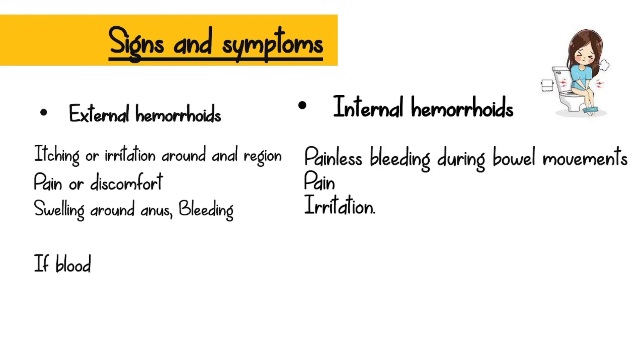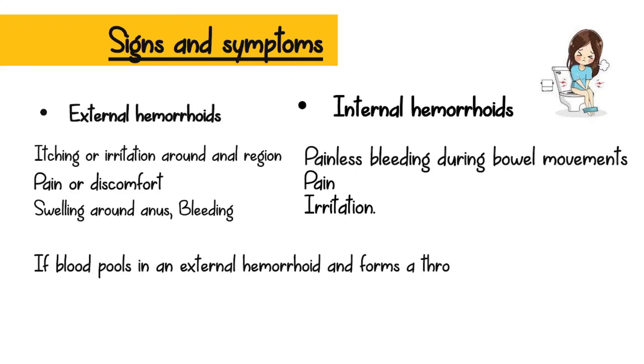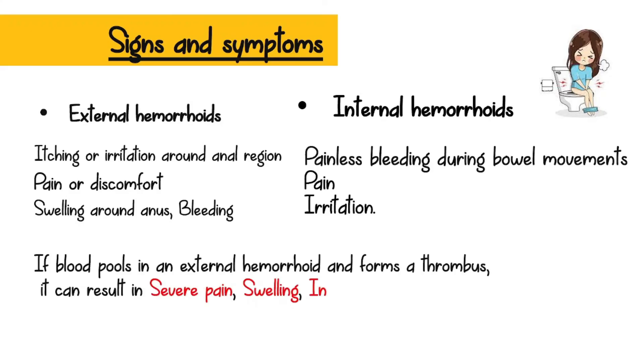If blood pools in an external hemorrhoid and forms a thrombus, it can result in severe pain, swelling, inflammation, and formation of a hard lump around the anus.